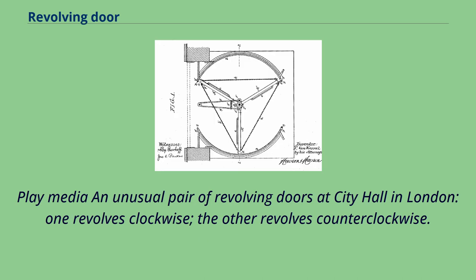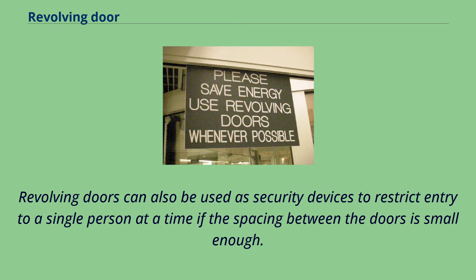An unusual pair of revolving doors at City Hall in London: one revolves clockwise, the other revolves counterclockwise. Revolving doors can also be used as security devices to restrict entry to a single person at a time if the spacing between the doors is small enough.